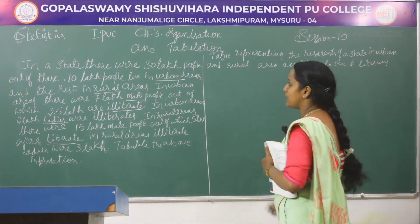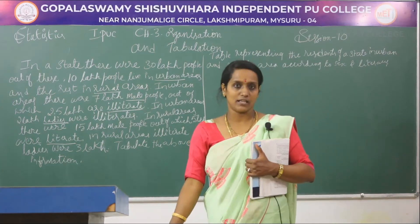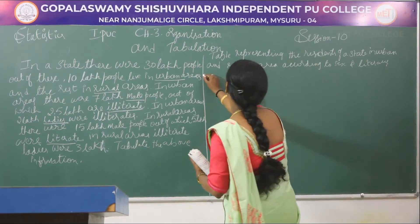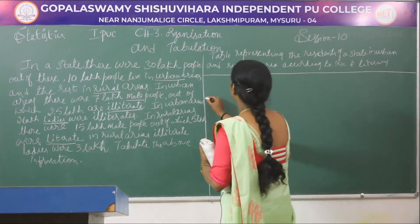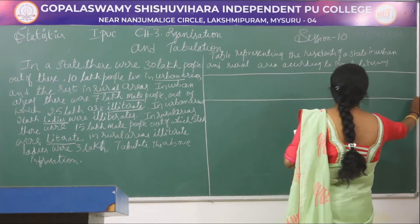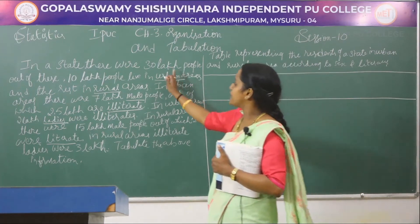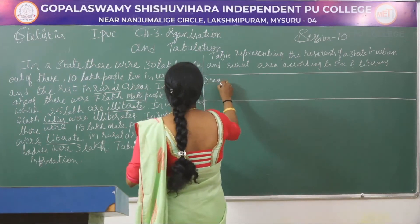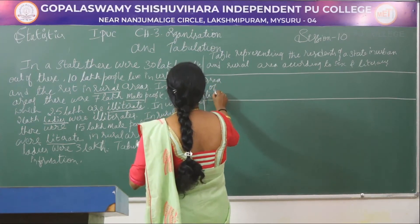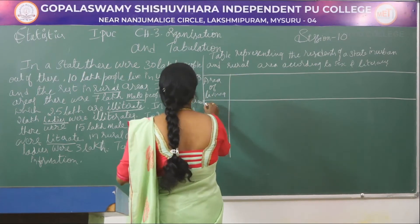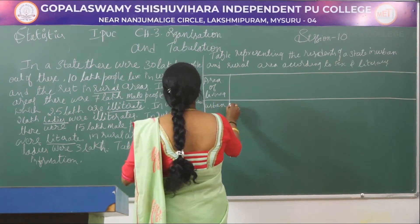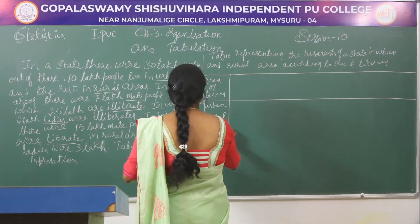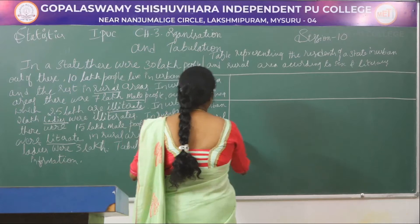These figures will be in numbers. First I will write the table format. The first column will be area of living — one is urban and one is rural — and the last is total.